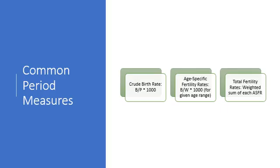The most common of the measures — the common period measures that many viewers might be familiar with — are the crude birth rate, which we've discussed in other presentations already. That's the overall number of births relative to the overall population. Then we have age-specific fertility rates, which break the population down into an age structure for women and examine the fertility rate for each age cohort. Then the total fertility rate, which is the weighted sum of all the age-specific fertility rates.